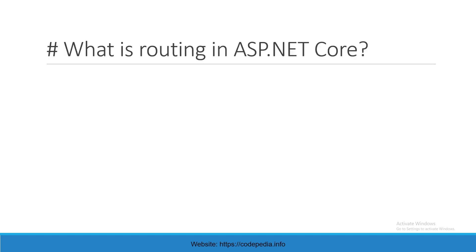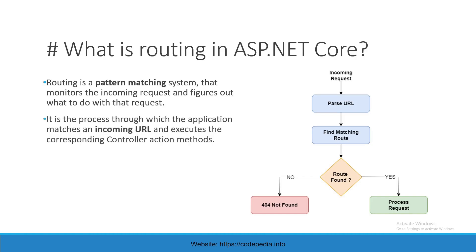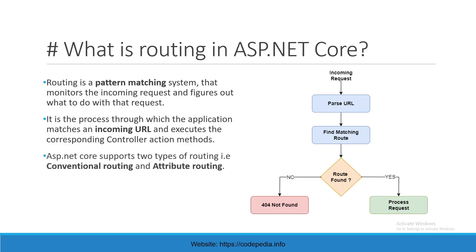What is routing in ASP.NET Core? Routing is basically a pattern matching system that monitors the incoming request and figures out what to do with that request. It's a process through which the application matches the incoming URL and executes the corresponding controller action method. ASP.NET Core supports two types of routing: conventional routing and attribute routing.